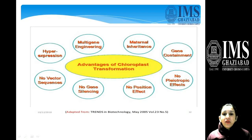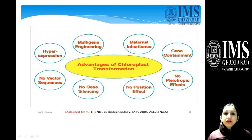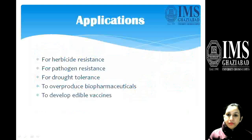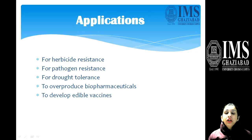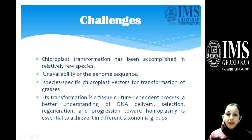The advantages of chloroplast transformation include no vector sequences, hyper-expression, multi-gene engineering, and no position effect. Applications include herbicide resistance, pathogen resistance, drought tolerance, overproduction of biopharmaceuticals, and development of edible vaccines.